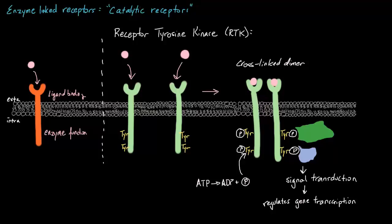What happens when RTKs fail to function properly? Since RTKs primarily regulate cell growth, they can cause issues in the growth and differentiation of cells if they're not working. In fact, many cancers involve mutations in RTKs. For this reason, RTKs are actually a target of many drugs used in chemotherapy. For example, the breast cancer drug Herceptin is an antibody that binds and inhibits a particular RTK that is overexpressed in many different breast cancers.